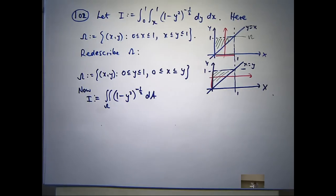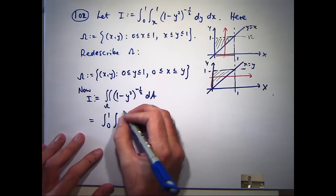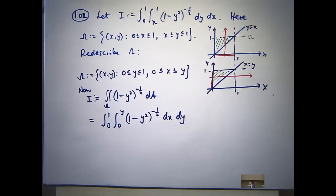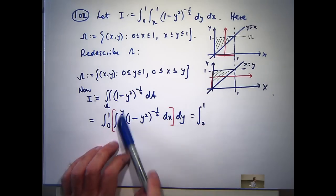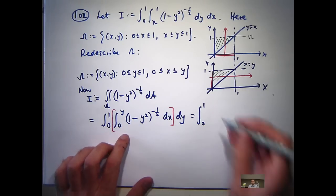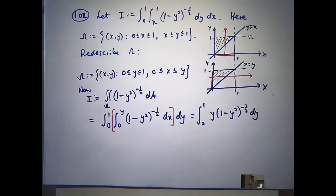This is just a double integral, and Fubini's theorem says I can write my double integral as a repeated integral over these types of regions. Now you can see one of the advantages of reversing the order of integration here — it's easy to integrate the inside integral with respect to x. So if I integrate with respect to x, it's just x times the integrand, and substituting in y and 0 for x, I get the simplified expression.